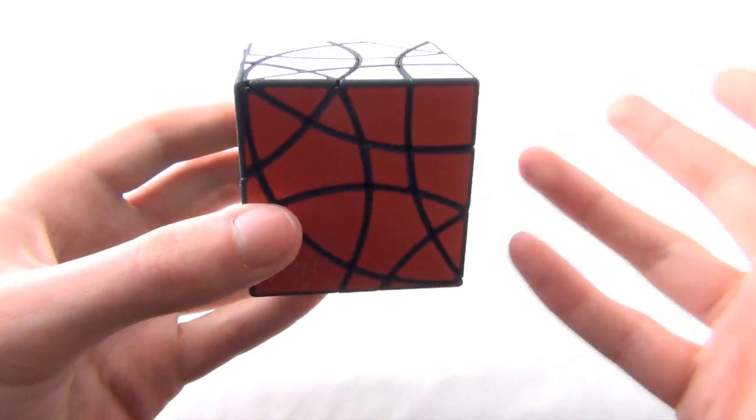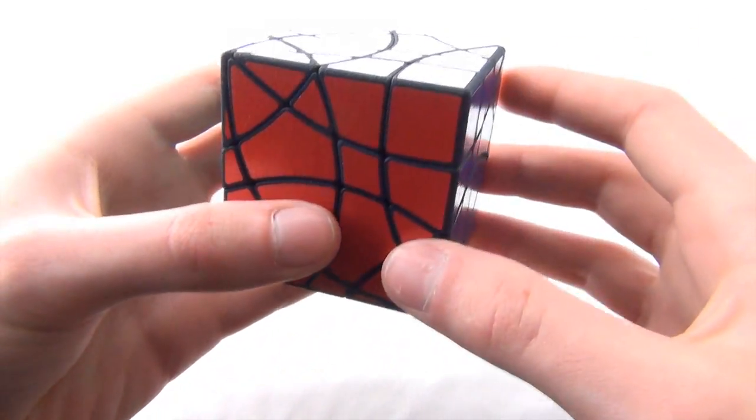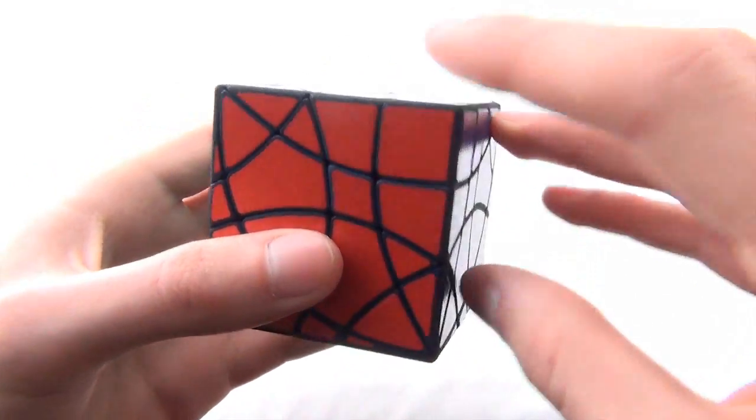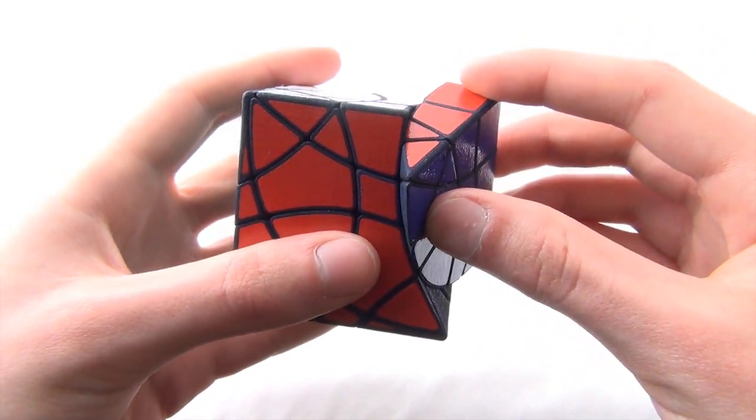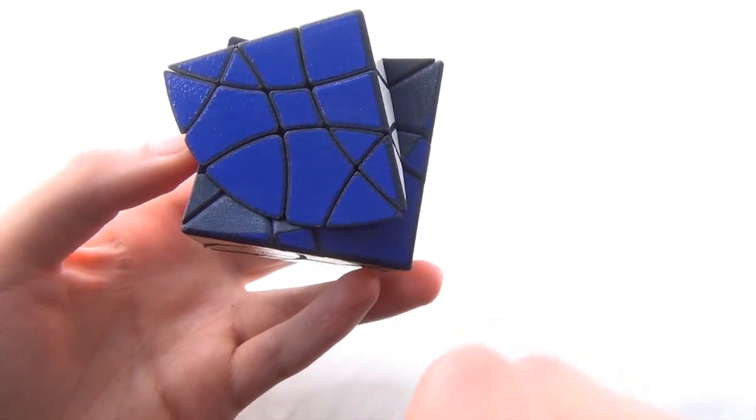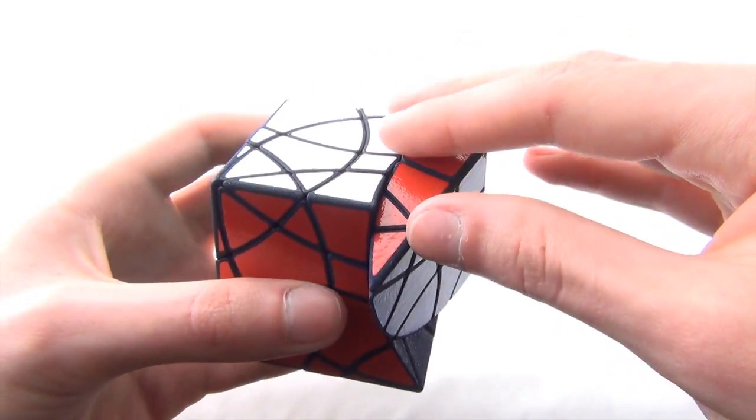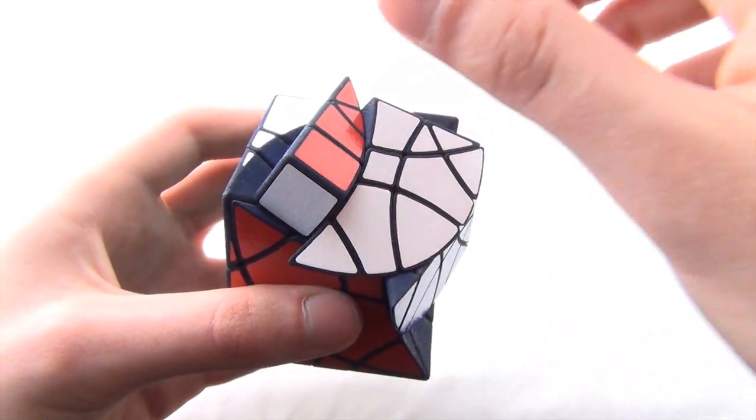However, just like any other puzzle based on an edge-turning cube, this jumbles. So, we can turn one layer part-way, like this, so it's less than 180 degrees, and turn on another layer.